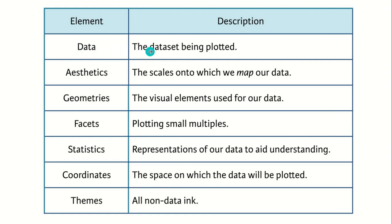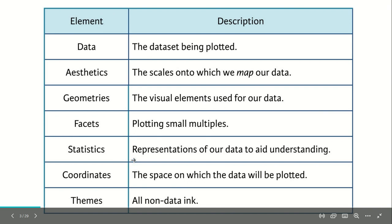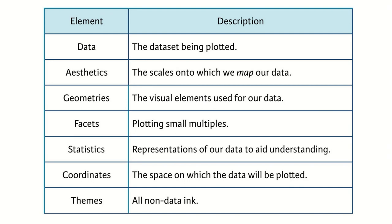We have these layers available: the data layer, through which we specify the dataset we'll be working on — today we'll use the iris dataset. Then aesthetics, where you define the scales onto which data is mapped. Then geometries — the visual elements like bar chart, box plot, scatter plot, or line graph. Then facets, for plotting sub-graphs or small multiples. Then statistics, to add statistical functions like linear regression. Then coordinates, to specify the space on which data is plotted. And finally themes, to customize the graph's appearance. We need to work in this order.